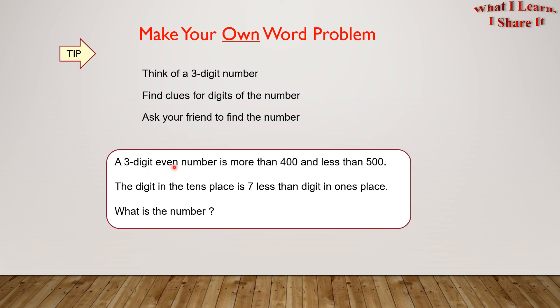A three-digit even number is more than 400 and less than 500. The digit in the tens place is seven less than the digit in the ones place. What is the number?